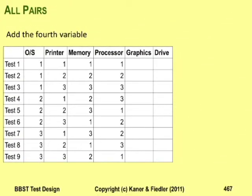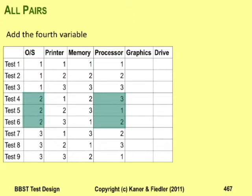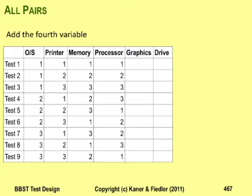Now add the fourth variable — the processor. Check the operating system with the processor first: OS one with processor one, two, and three; OS two with processor one, two, and three; and OS three with processor one, two, and three.